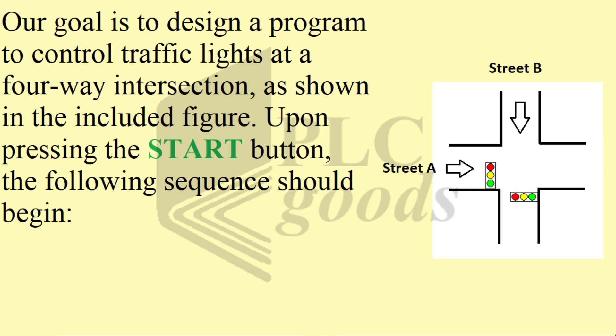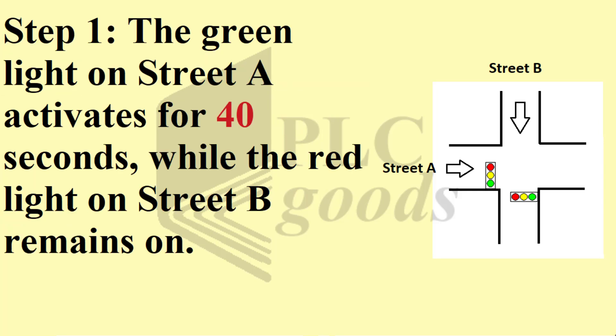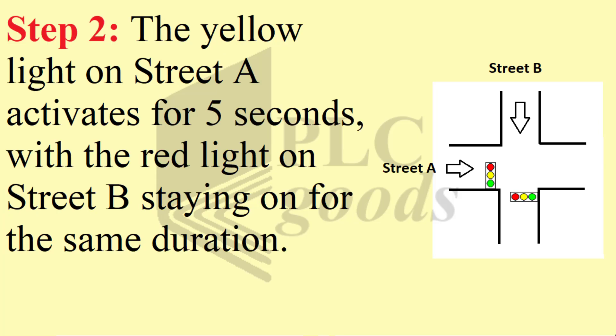Upon pressing the start button, the following sequence begins. Step one: the green light on Street A activates for 40 seconds while the red light on Street B remains on. Step two: the yellow light on Street A activates for five seconds, with the red light on Street B staying on for the same duration.